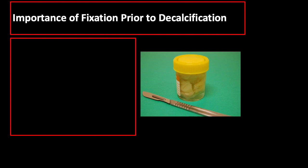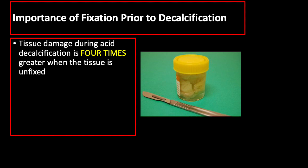After selection of tissue, the next step is fixation. We need to make sure that the tissue has been adequately fixed and rinsed well prior to decalcification. Tissue damage during acid decalcification is 4 times greater when the tissue is unfixed. In order to protect the cellular and fibrous elements of bone from damage caused by the acids used as decalcifying agents, it is particularly important to thoroughly fix these specimens prior to decalcification.